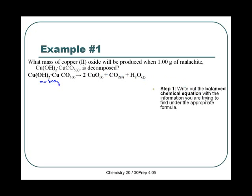We're trying to find the mass of Cu₂O. The only formula we have with mass is our molar mass formula: molar mass equals mass over moles. We're going to use this formula to find our mass of CuO and also to find out the number of moles of malachite. So we're going to need our molar masses from our periodic table. The molar mass of malachite is 221.13 grams per mole, and the molar mass of Cu₂O is 79.55 grams per mole.